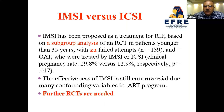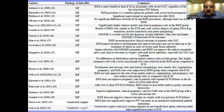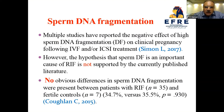ICSI has been proposed as a treatment for RIF based on a subgroup analysis of a randomized controlled trial in patients younger than 35 with two or more failed attempts. However, the effectiveness of ICSI is still controversial due to many confounding variables in ART programs, and further randomized controlled trials are still needed. There is a long list of trials comparing ICSI versus IVF.